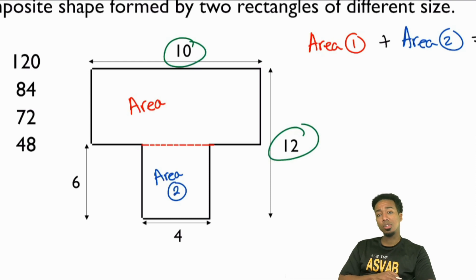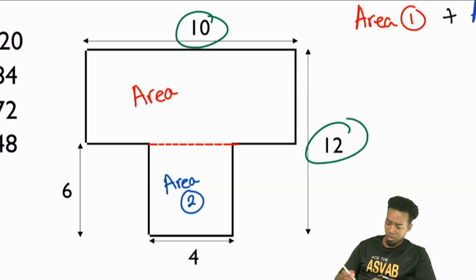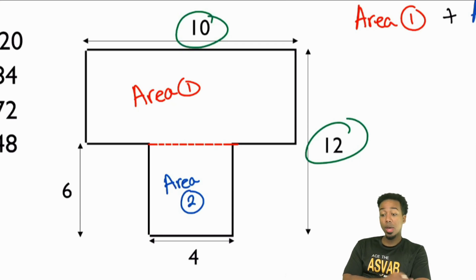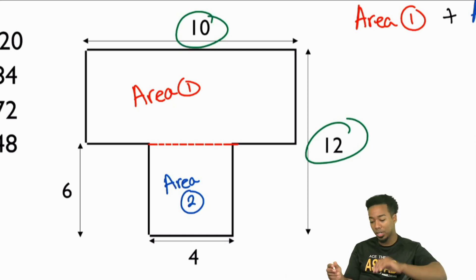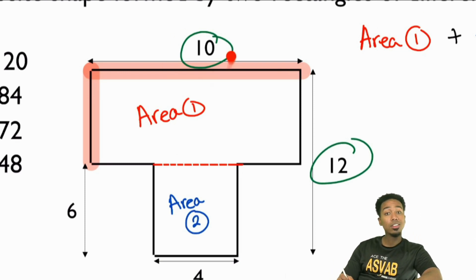Area of a rectangle — what formula are we using? It's going to be length times width. When we're taking a look at the first rectangle, do we automatically know what one of the dimensions is? The 6, the 10, the 12 — which one fits? I'm going to argue the answer is 10, because if you're looking at the area of the first one, you need the length here and the width there. Which one do you already have? The 10 — that 10 covers the entire top.